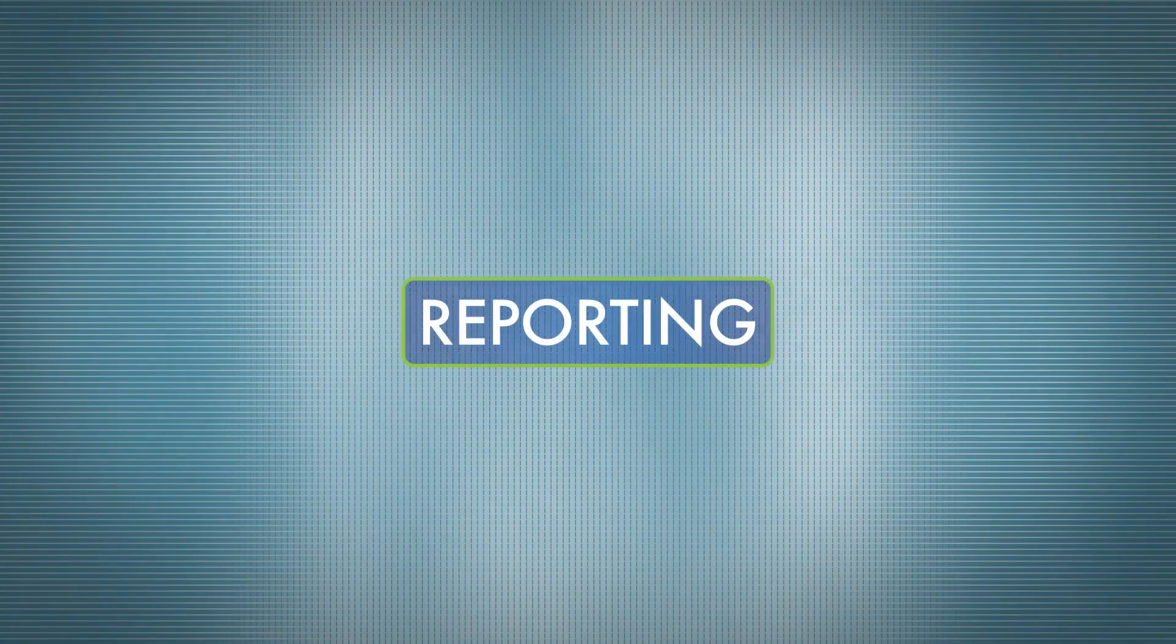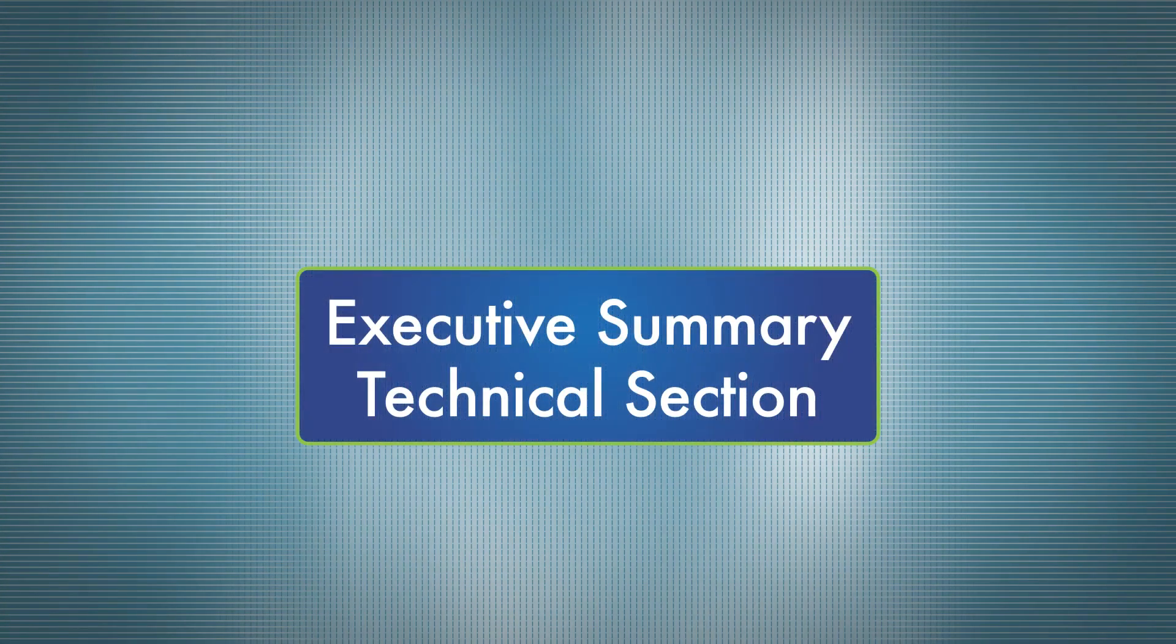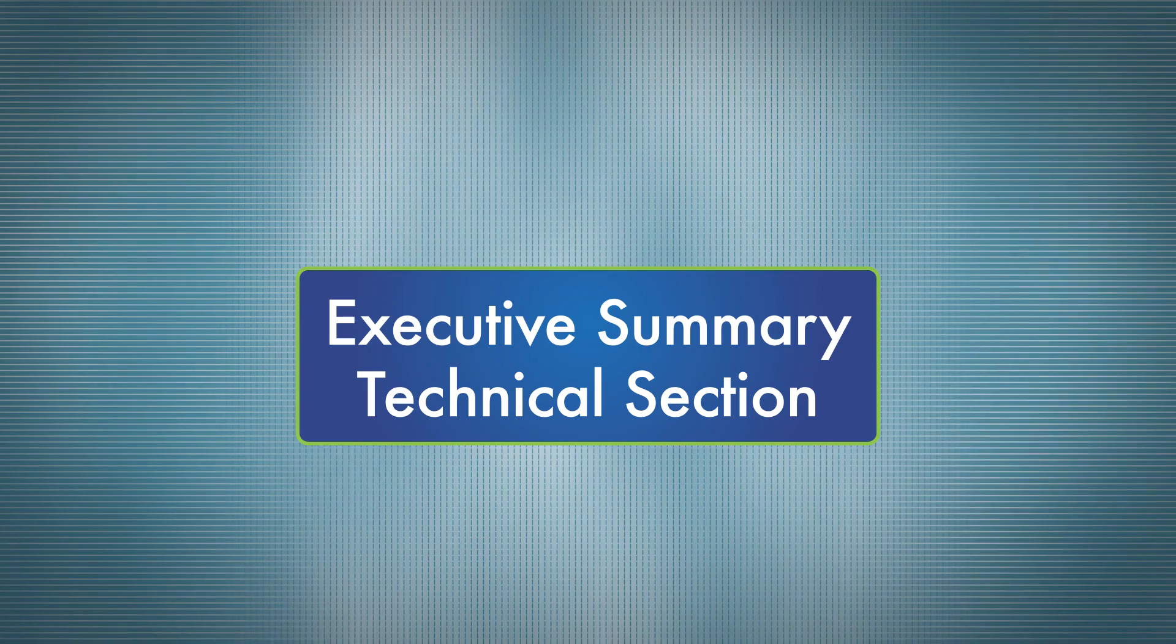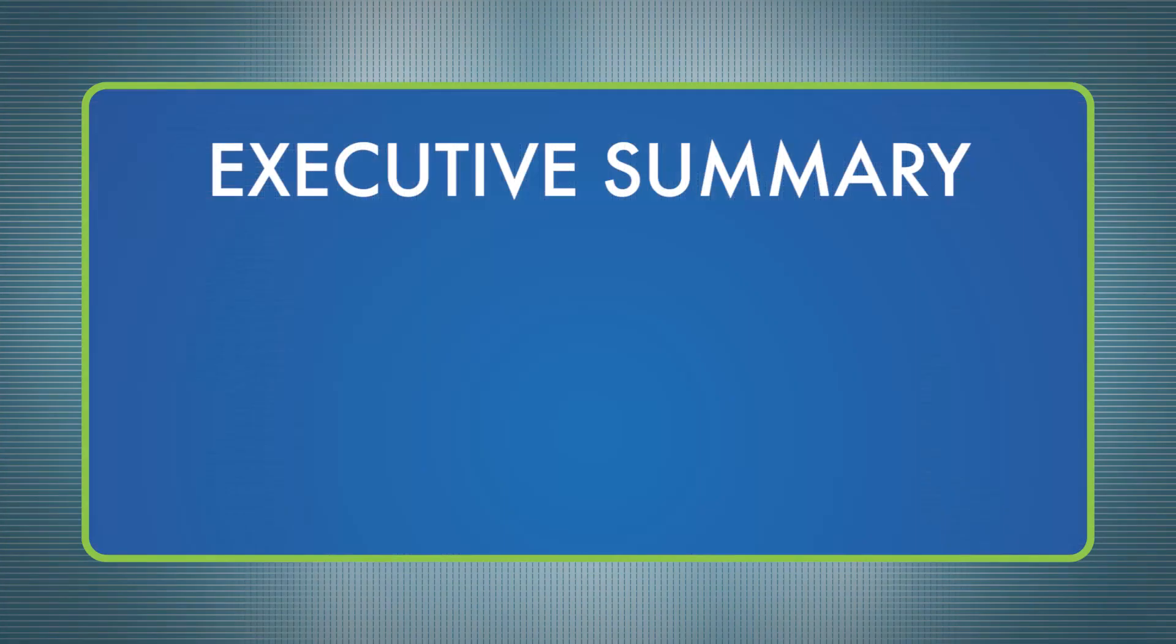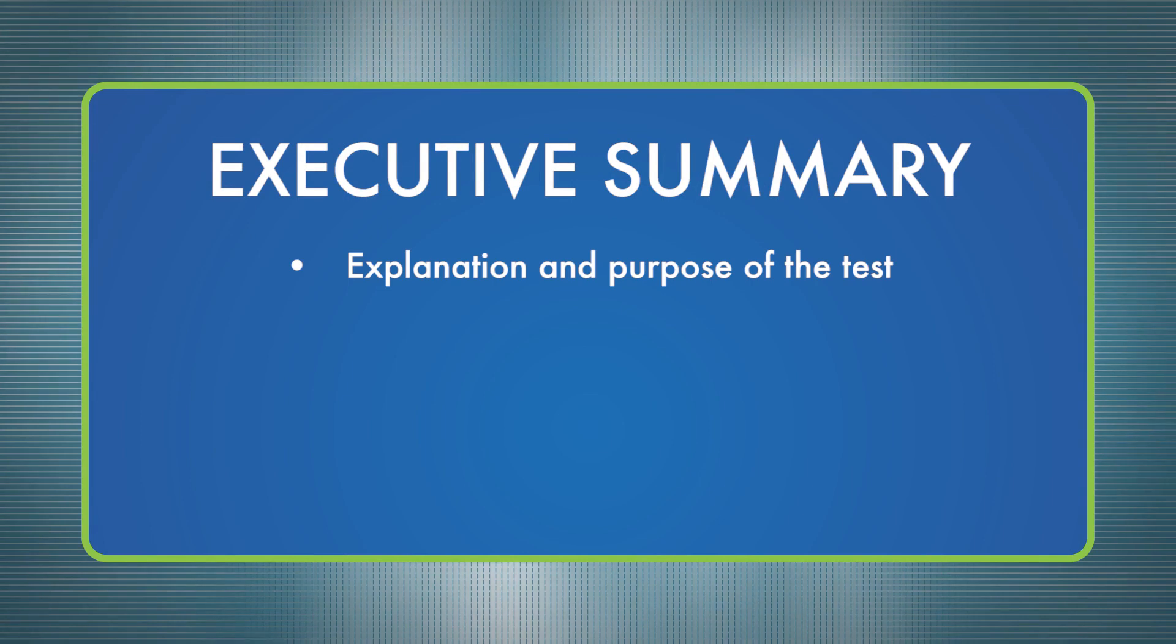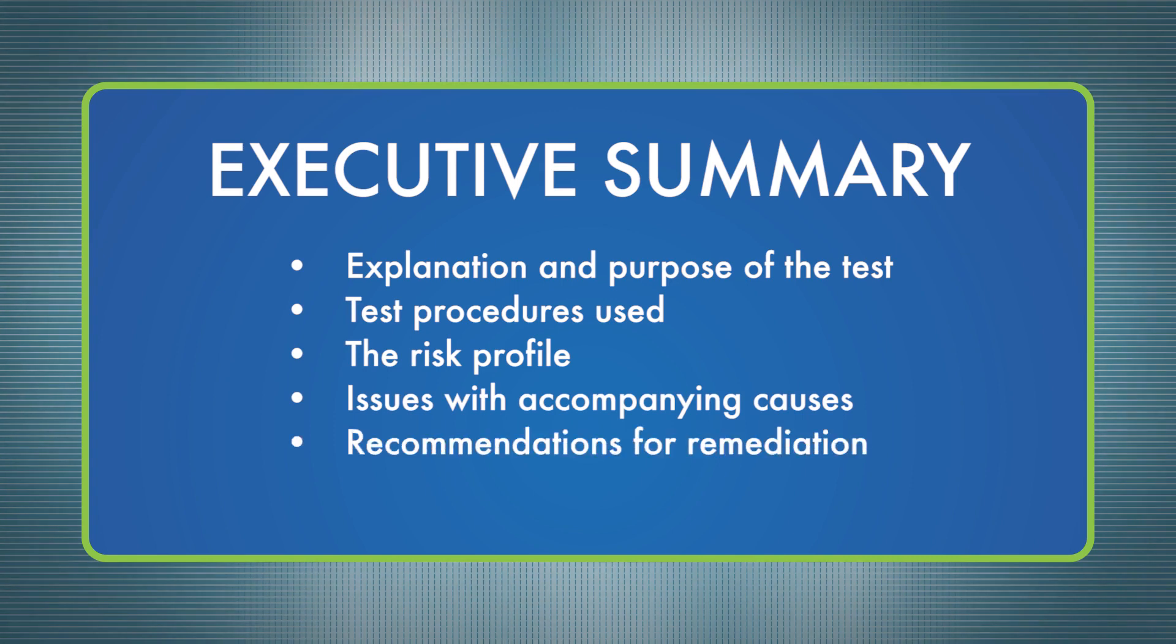It's important to enable testing teams to communicate through secure channels for the purpose of reporting as well as responding to unforeseen events if the need arises. No penetration test is complete without a comprehensive report. This report is comprised of two critical pieces, an executive summary and a technical section. The executive summary outlines the goals of the test and discoveries uncovered during the test. This summary typically includes an explanation of the purpose of the test, the test procedures used, the risk profile, the issues with accompanying causes, recommendations for remediation, and an actual plan for remediation. This plan should line up with the company's business objectives.